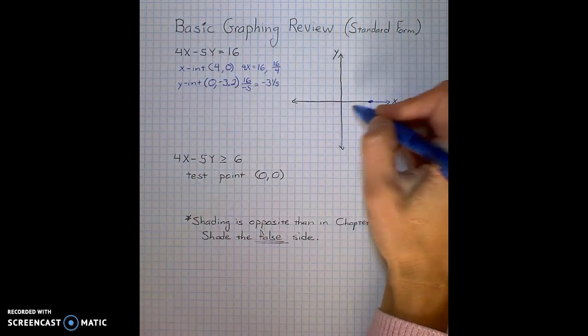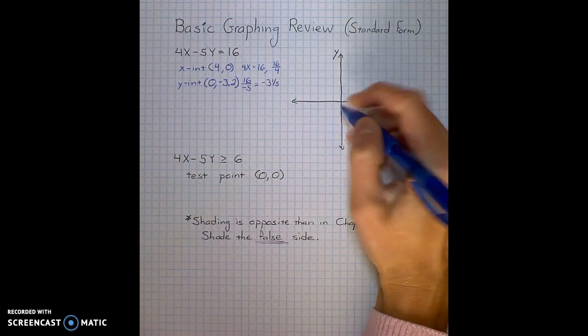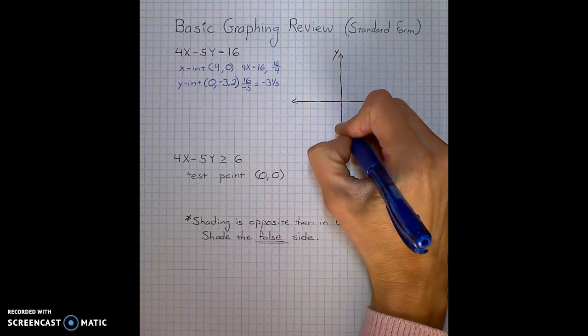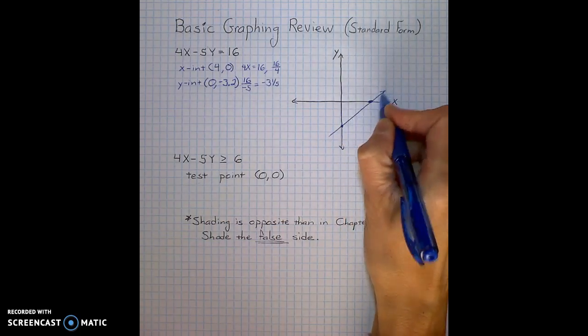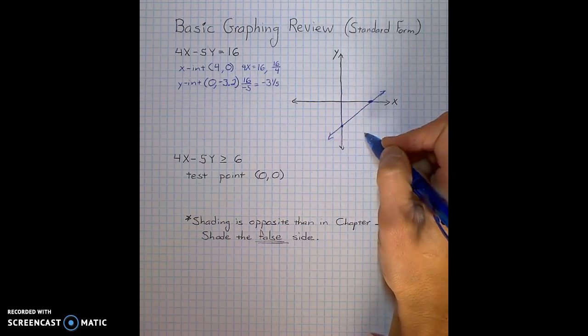Then you come to the y-axis, put a point at negative 3.2, draw yourself a line. You have now graphed the equation 4x minus 5y equals 16.